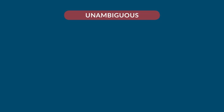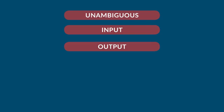We also have the characteristics of an algorithm. First is unambiguous — algorithms should be clear and unambiguous. Each of its steps or phases and their inputs and outputs should be clear and must lead to only one meaning. Second is input: an algorithm should have zero or more well-defined inputs. Third is output: an algorithm should have one or more well-defined outputs and should match the desired output.